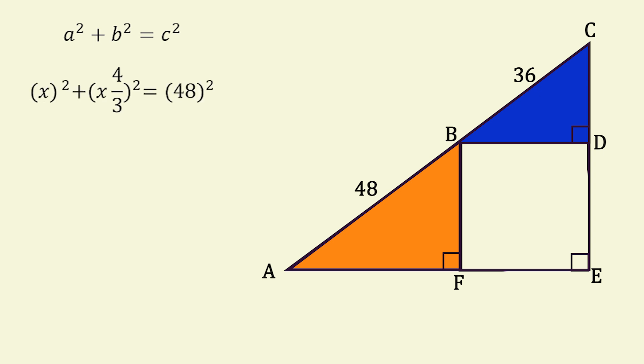X squared plus 4 thirds X squared equals 48 squared. X squared plus 16 divided by 9X squared equals 2304. To combine the X squared terms, we can factor it out. X squared times 1 plus 16 divided by 9 equals 2304.